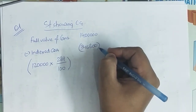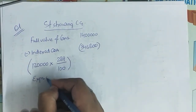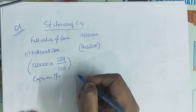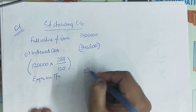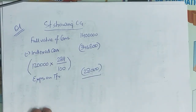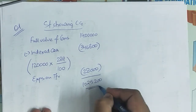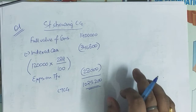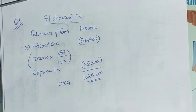Indexed cost of improvement — there is no case of improvement here. And what is minus next? Expenses on transfer: 2% of sale price, i.e., 2% of Rs 14,00,000 = Rs 28,000. So capital gain = Rs 14,00,000 minus Rs 3,46,800 minus Rs 28,000 = Rs 10,25,200. This is long-term capital gain. So this is the long-term capital gain for question number 1.